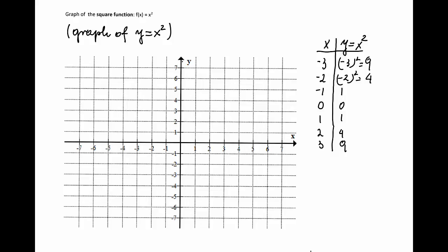Now I will plot the point values. So if x is equal to negative 3, I will have the value 9, so it's going to be somewhere here. For negative 2, y is equal to 4. So that's point negative 2 and 4.